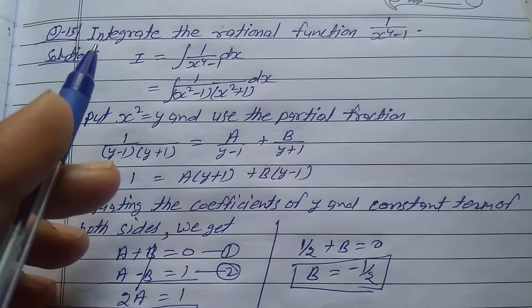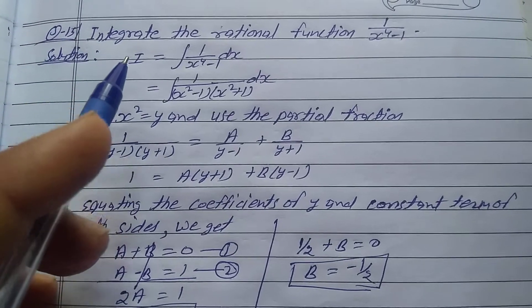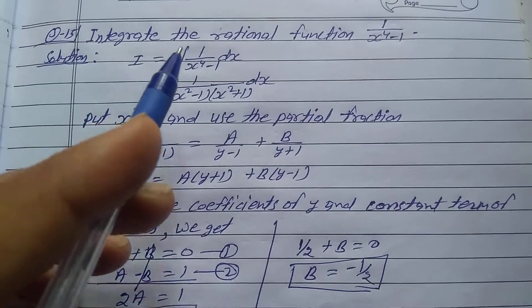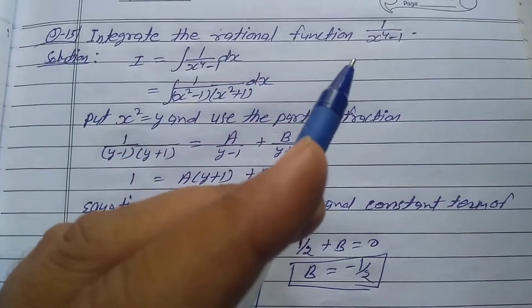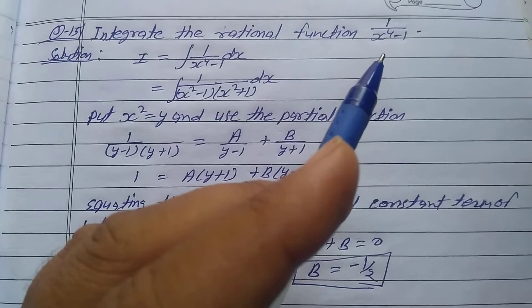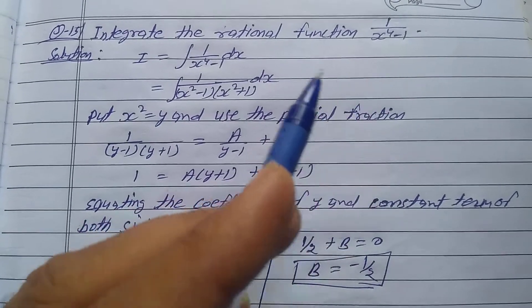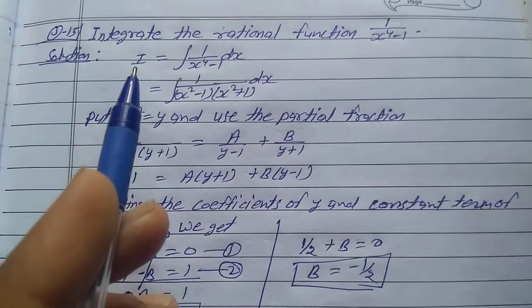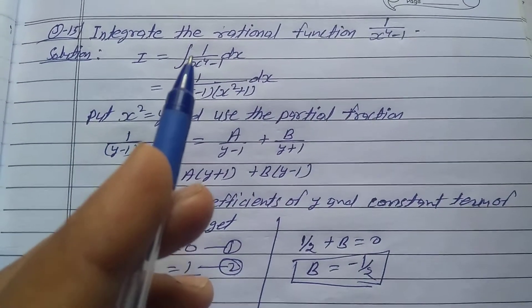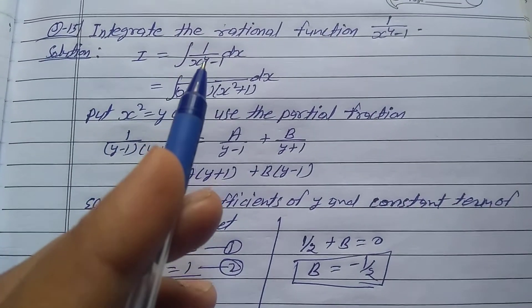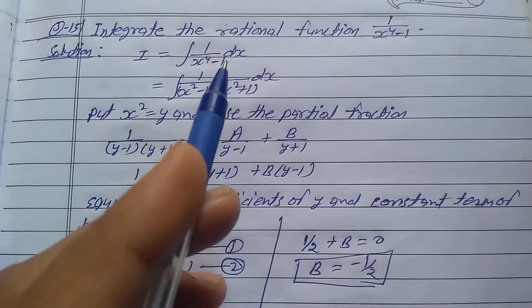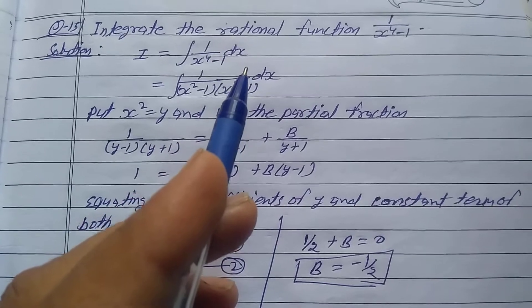Explanation number 15, Exercise 7.5, Class 12th. Integrate the rational function 1 upon x power 4 minus 1. Solution: Let I equal to the integration of 1 upon x power 4 minus 1 dx.